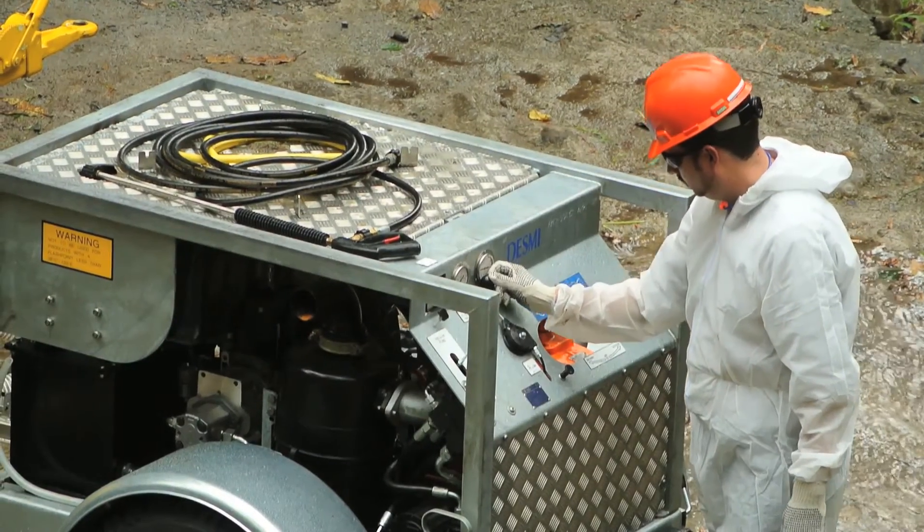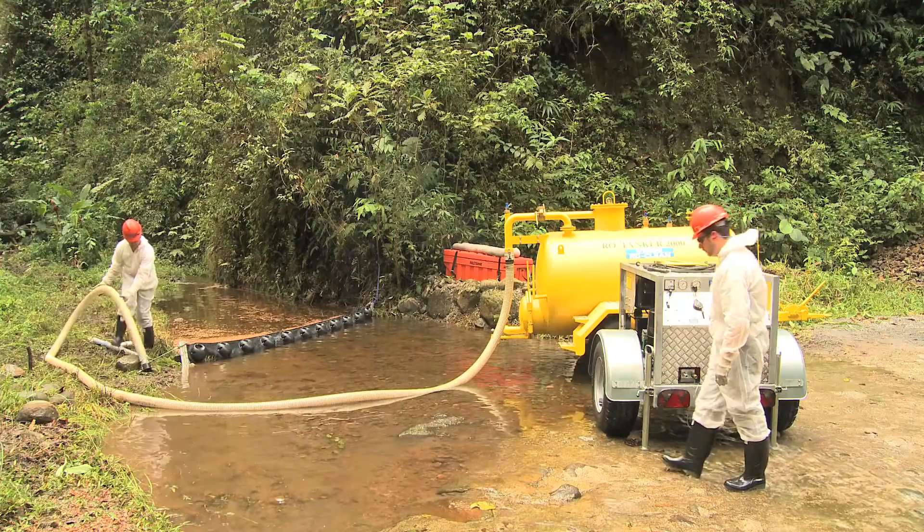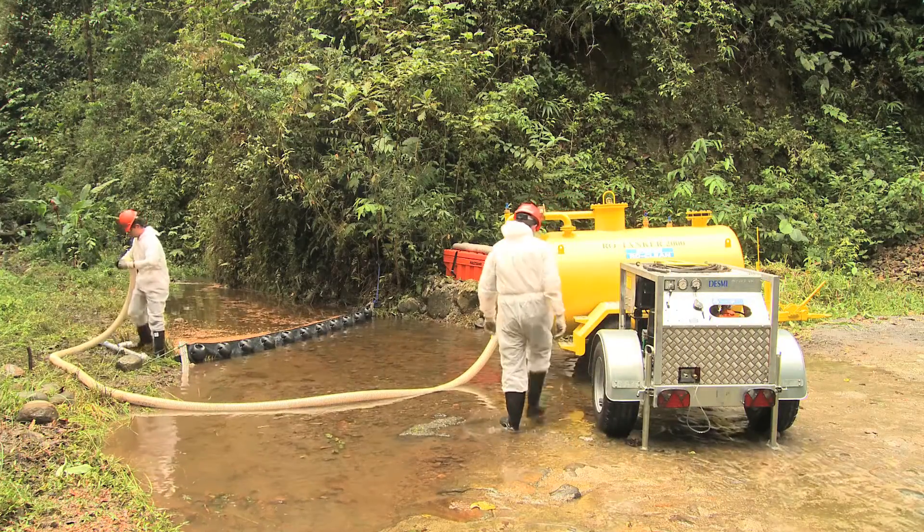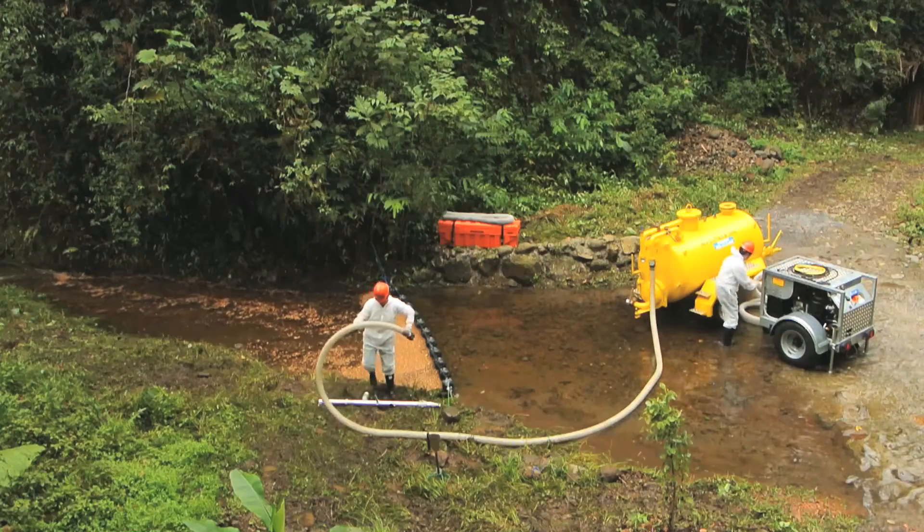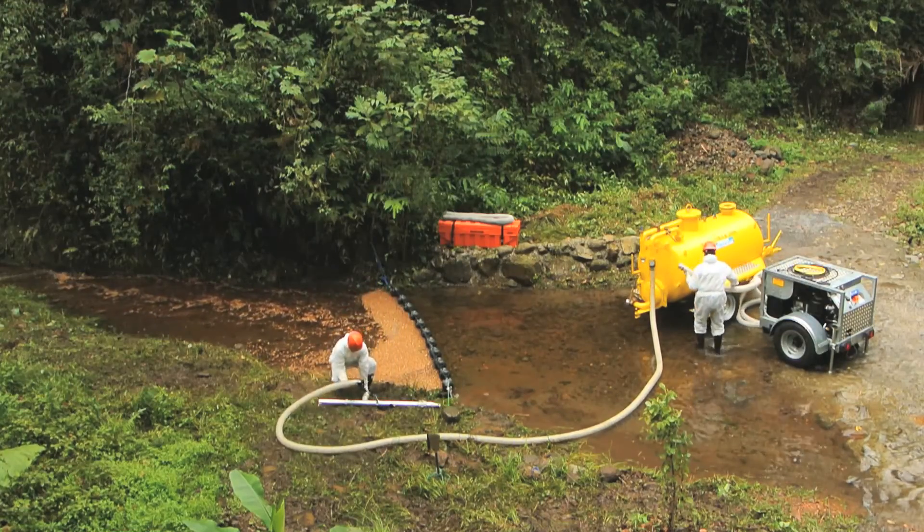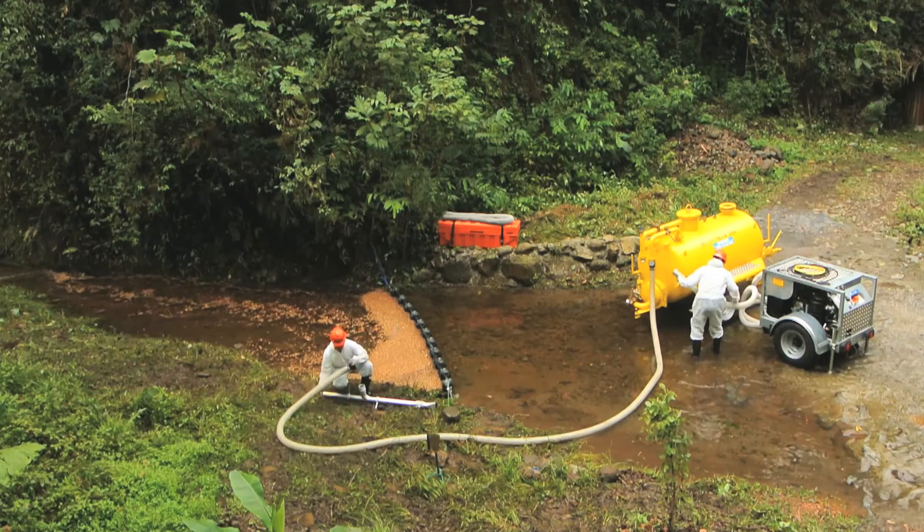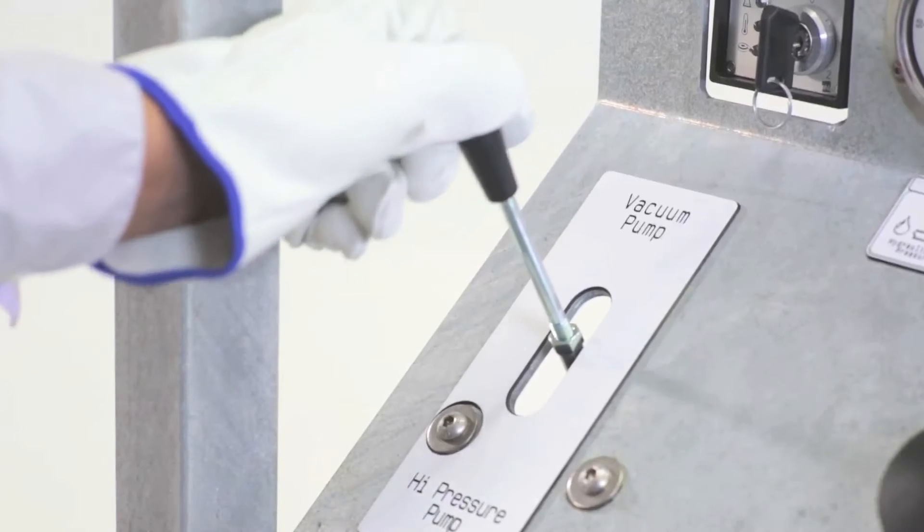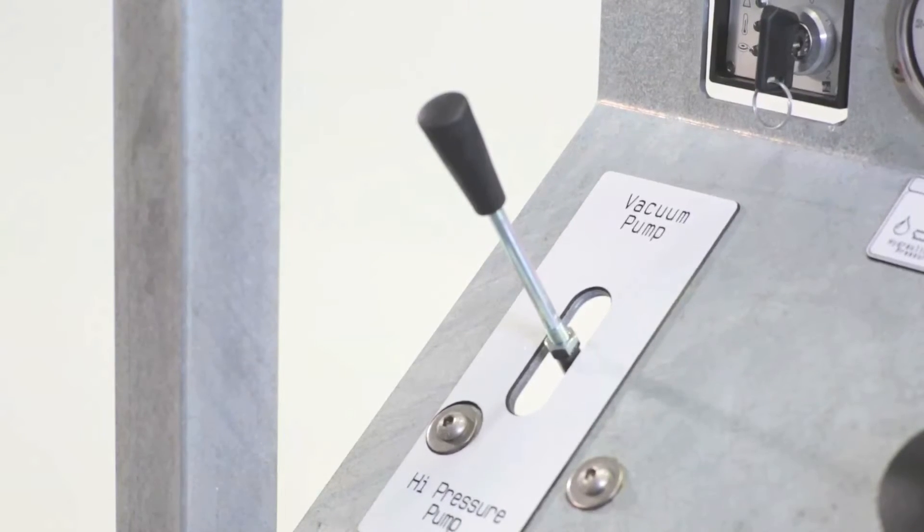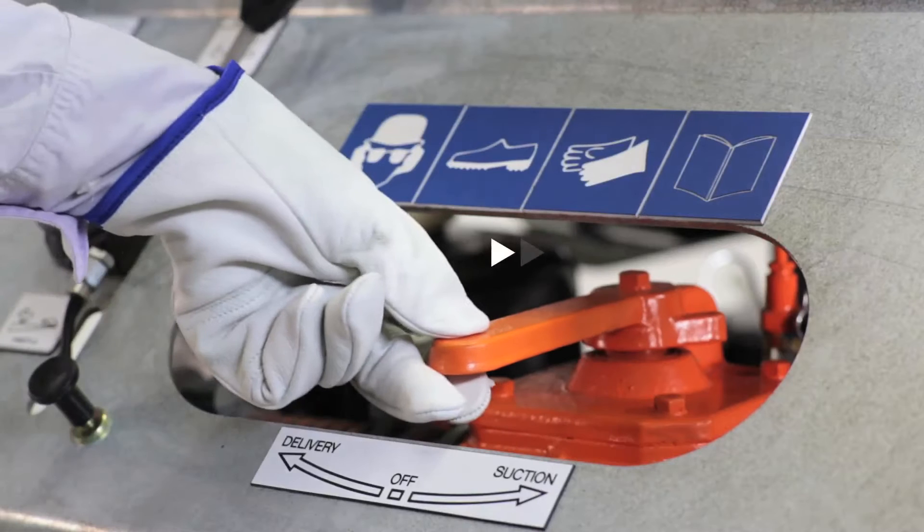The ROVAC should not be started or operated with the valves or hoses closed. The high vacuum level created on the hoses without air circulating will produce overheating of the unit. Check that the hydraulic control lever and the vacuum control lever are in the neutral and off position.